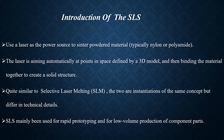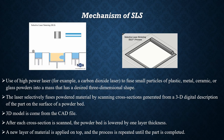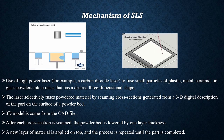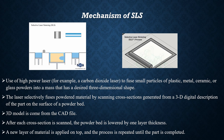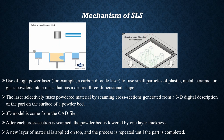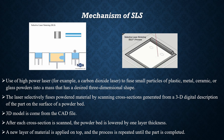SLS has mainly been used for rapid prototyping and for volume production of component parts. As you can see from the illustration, the mechanism of SLS works as follows: firstly, a high-power laser is used to fuse small particles of plastic, metal, ceramic, or glass powder into a mass. The laser selectively fuses powdered material by scanning cross-sections generated from a 3D digital description of the part on the surface of a powder bed.